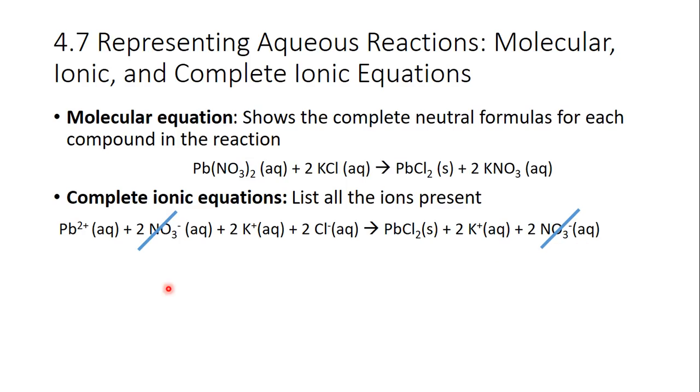Therefore, these will actually cancel each other out. If something is found both as a reactant and both as a product, it is canceled out. And there is actually one more. That is the potassium. We have two potassium as a product, two potassium as a reactant. So they are canceled out.